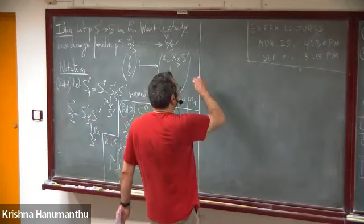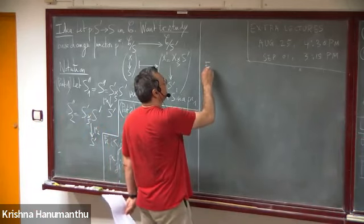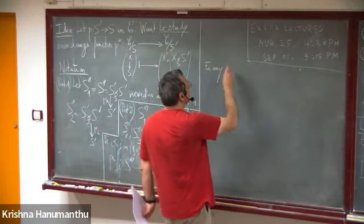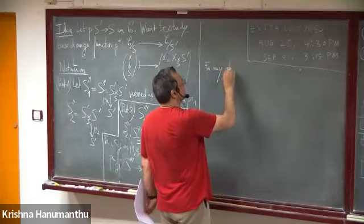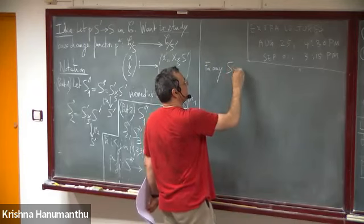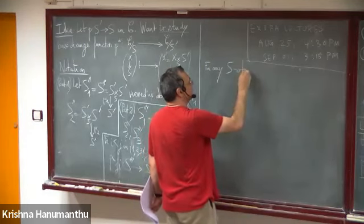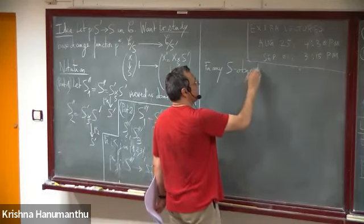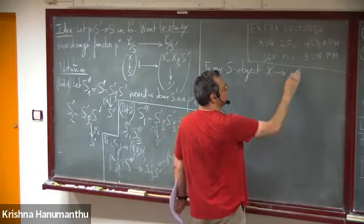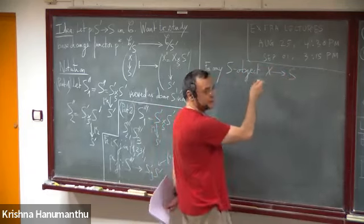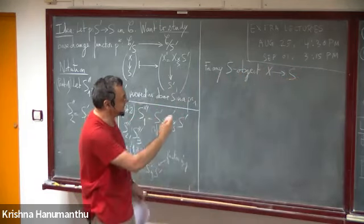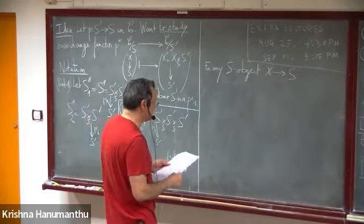For any object over S — that is, a scheme with a map to the base scheme S — and any S'-object X', we denote by X''_1 the fiber product X' ×_{S'} S''_1, and similarly X''_2.